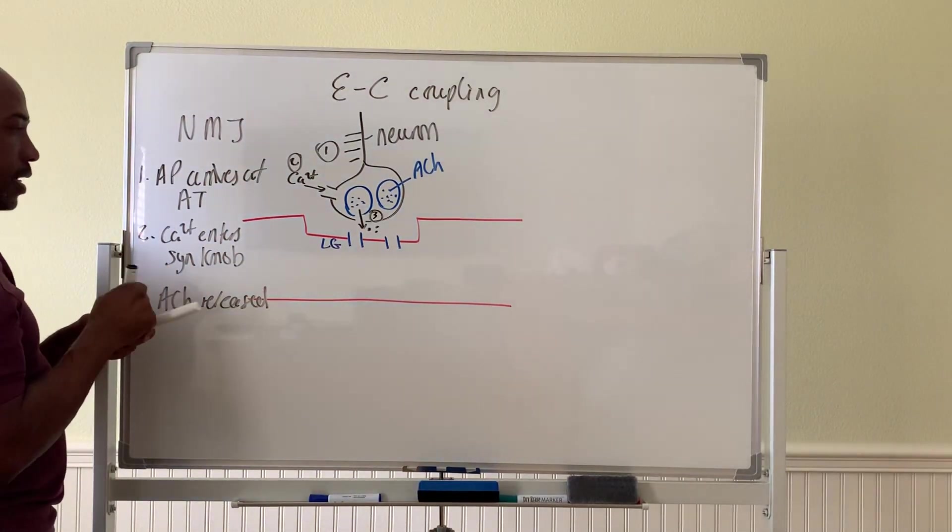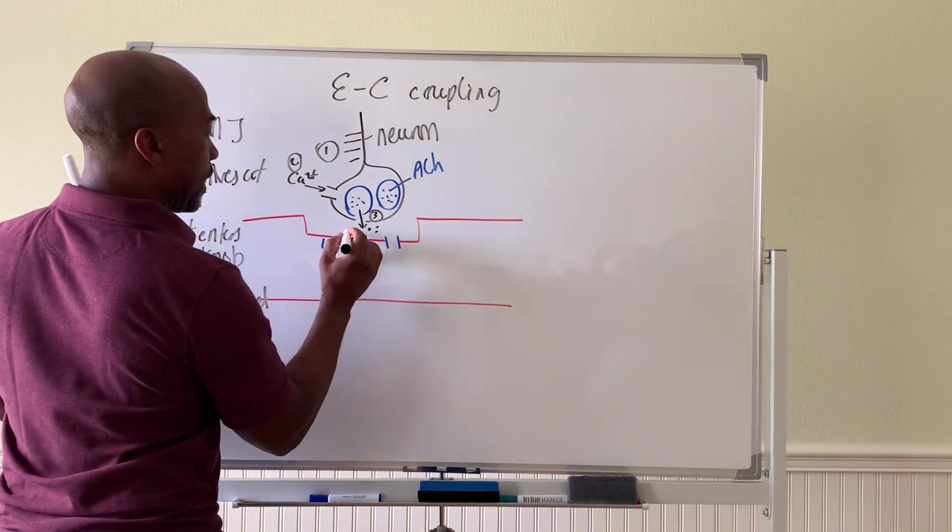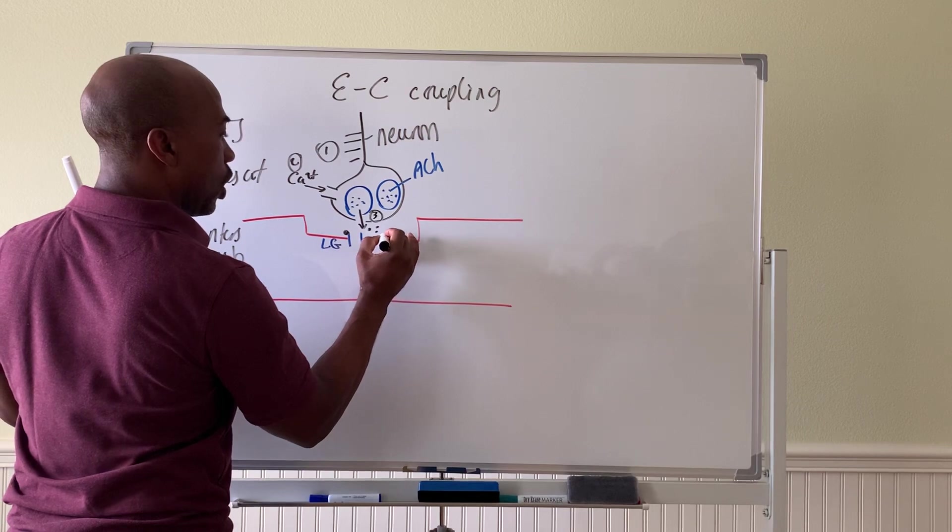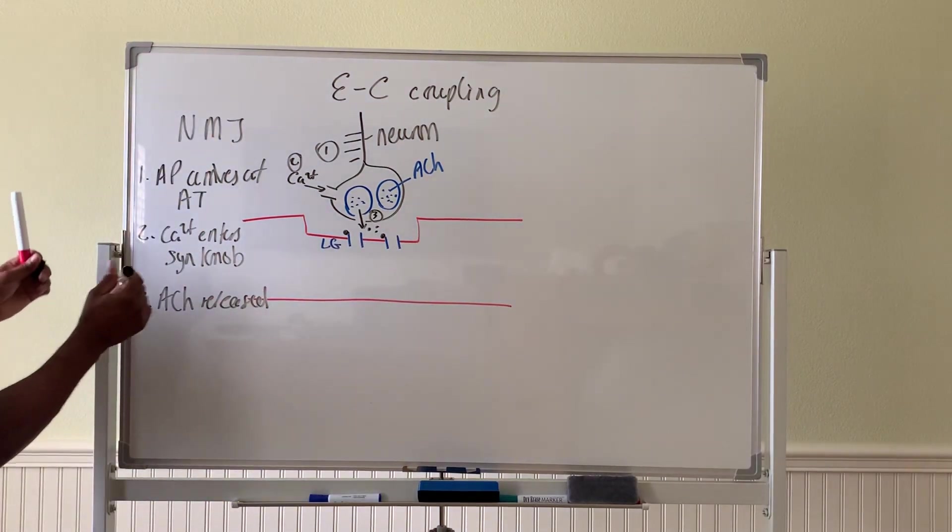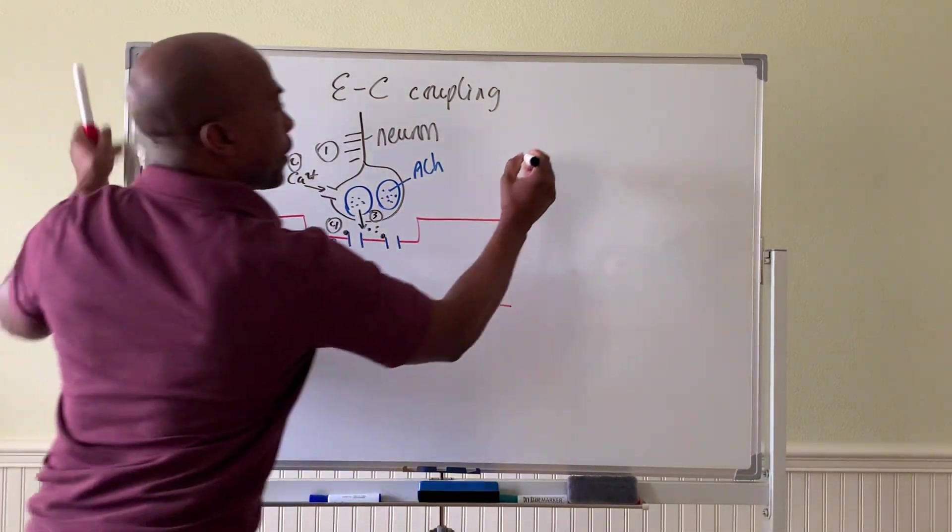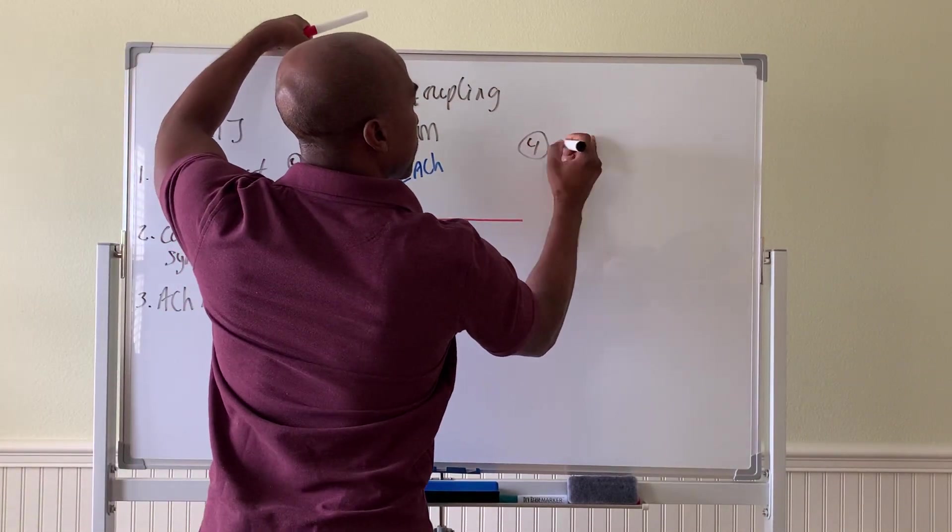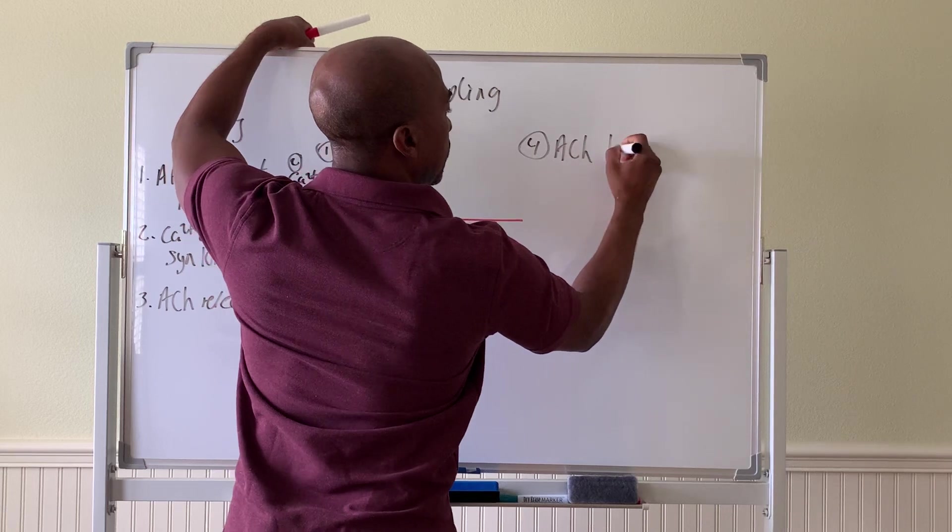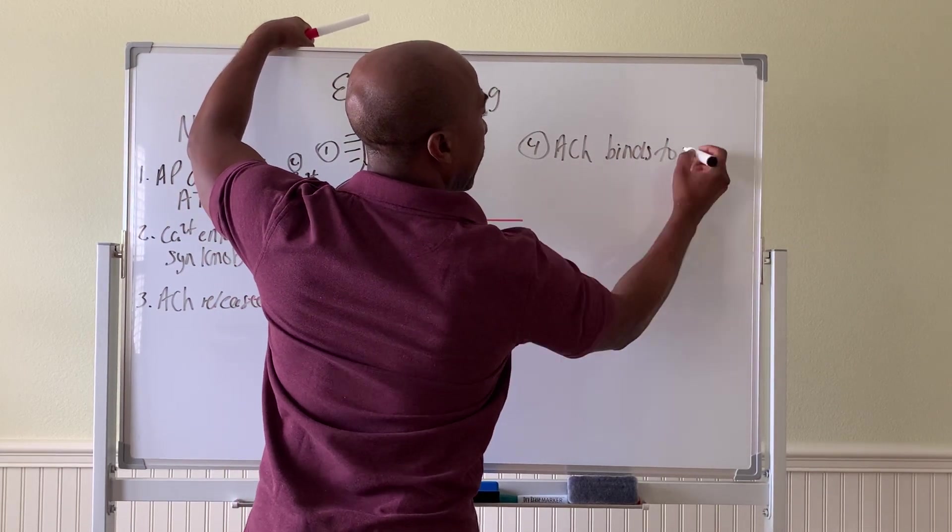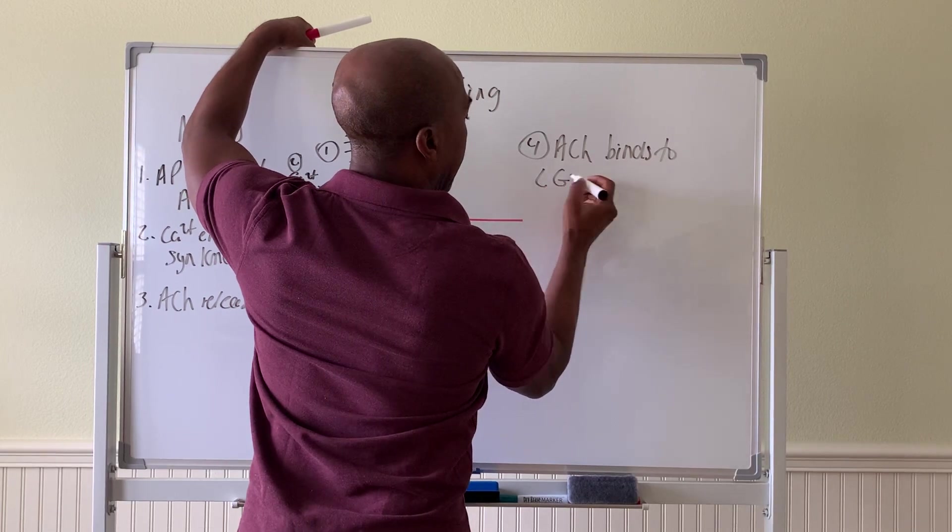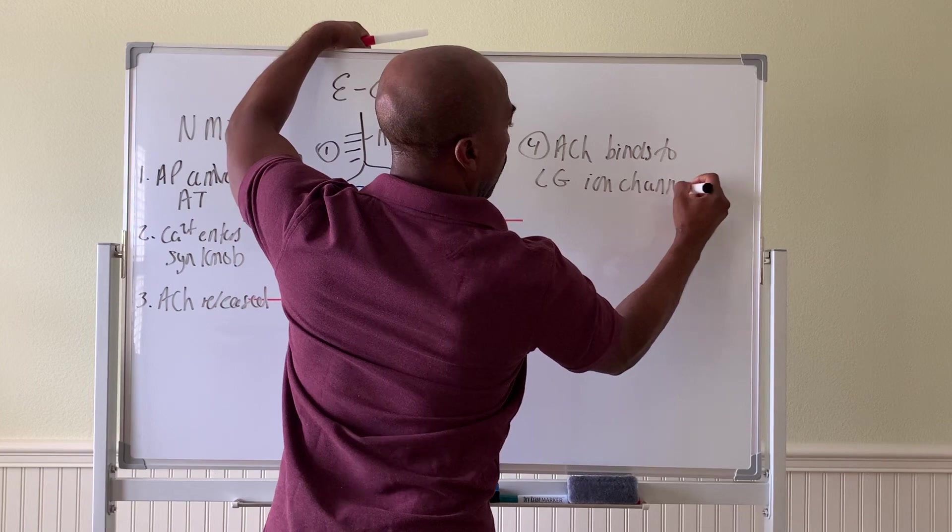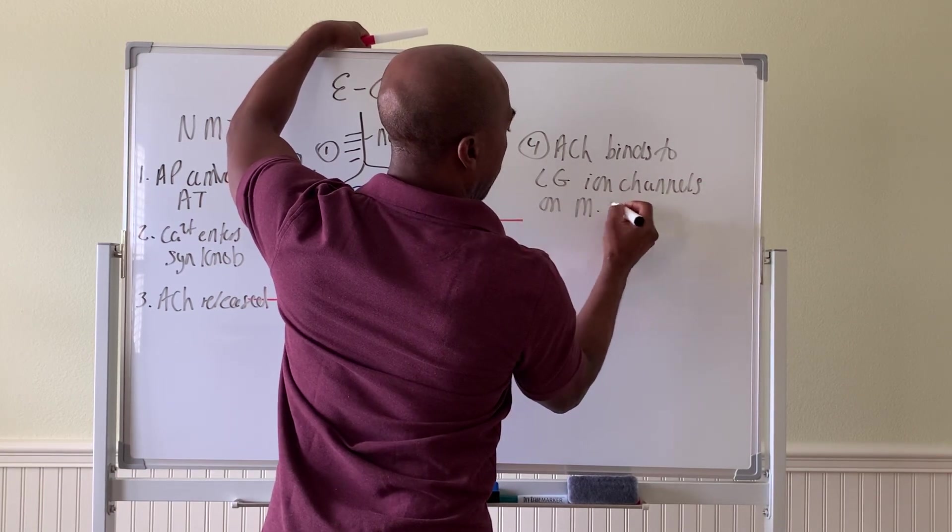Then step four, the ACH binds to the ligand-gated channels on the muscle cell. So step four, ACH binds to ligand-gated ion channels on the muscle cell.